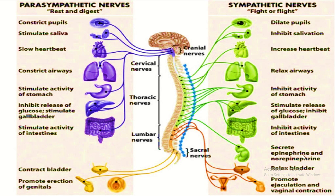Norepinephrine is secreted, and blood vessels are very important. Our heart and blood vessels are pumping all the time. That is why epinephrine and norepinephrine stimulate the adrenal gland. Sympathetic also promotes ejaculation and vaginal contraction. This is why our body has a fight-or-flight response versus rest and digest.